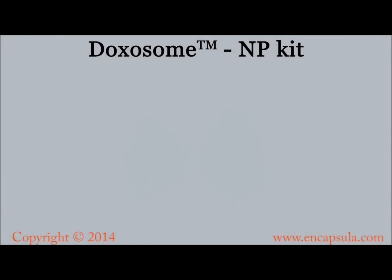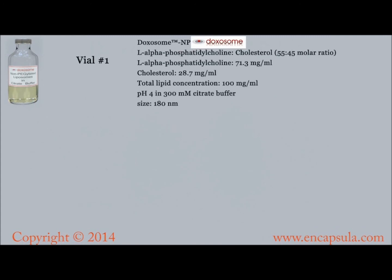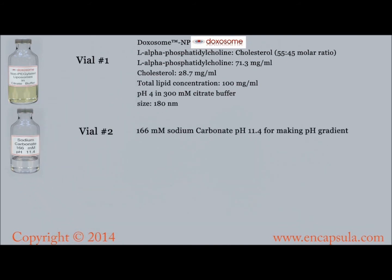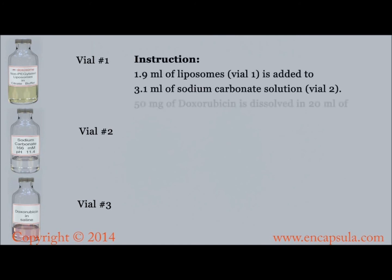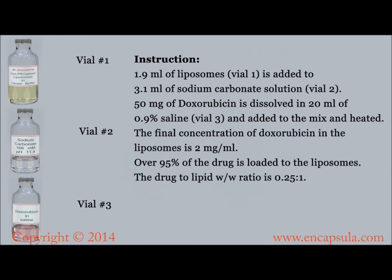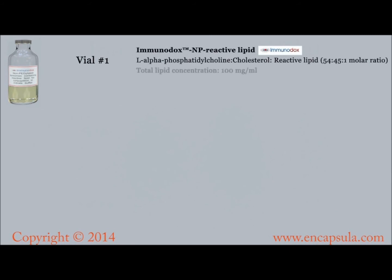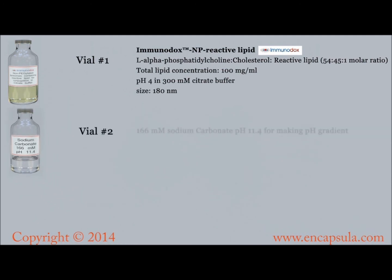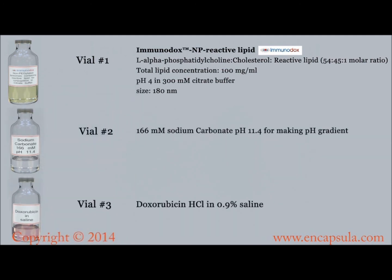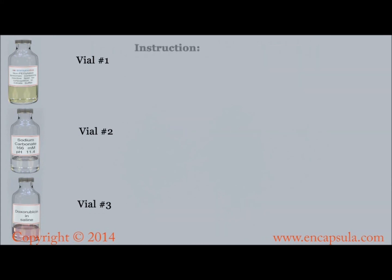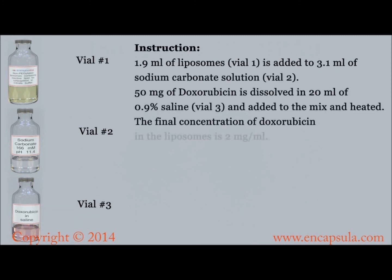Non-pegylated products come as a three-vial kit. The doxosome non-pegylated vial 1 contains the plain liposomes in a citrate buffer. Vial 2 is the sodium carbonate solution used for creating the pH gradient. Vial 3 contains the doxorubicin drug dissolved in saline. Each non-pegylated doxosome mixture contains 2 milligrams of encapsulated doxorubicin per milliliter and has a drug-to-lipid ratio of 0.25 to 1. The non-pegylated immunodox kits come in the same three-vial fashion; however, vial 1 contains 1 mole percent of the reactive lipid, while vials 2 and 3 are the same as the doxosome NP kit.